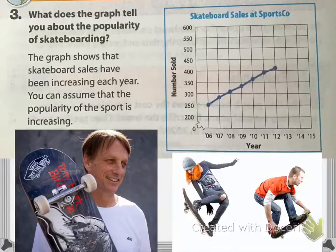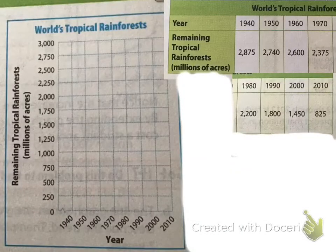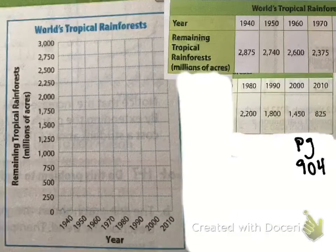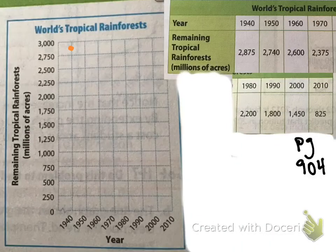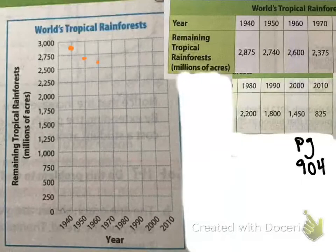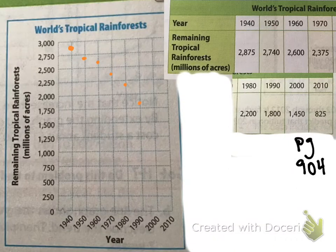Let's graph the world's rainforests together on page 904. Pause, graph it, then hit resume. In 1940 we have 2,875 — about there. Then 2,740, so a little below. Then 2,600 in the middle. Then 2,375, right about here. Then 2,200, right about here. Then 1,800, right about here. Then 1,450 here. And then 825 here. Connecting the dots we see a decline.